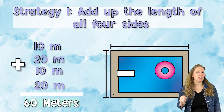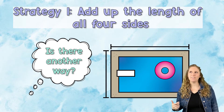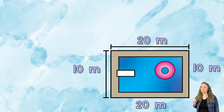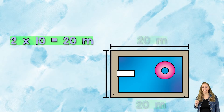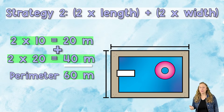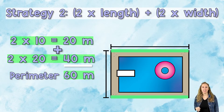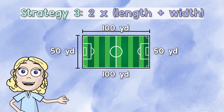But stop and think for a second — is there another way to find the perimeter of a rectangle? I'm going to show you another way. As you notice, you can write a separate equation: two times the length plus two times the width. That's because there are two lengths and two widths in a rectangle.